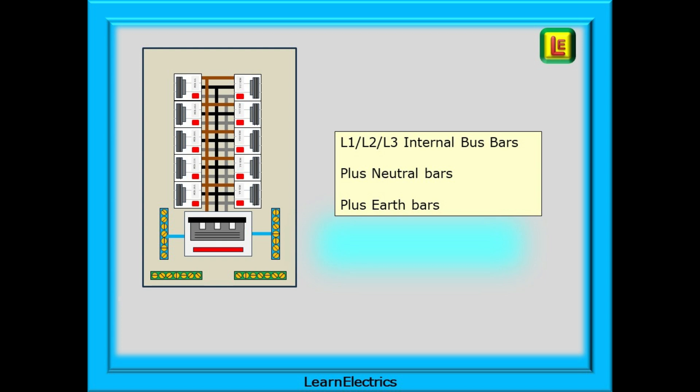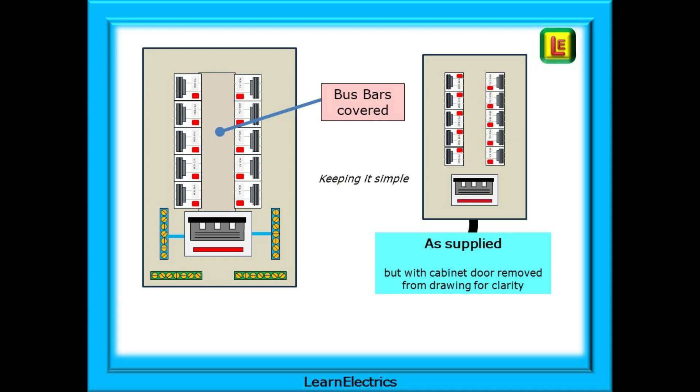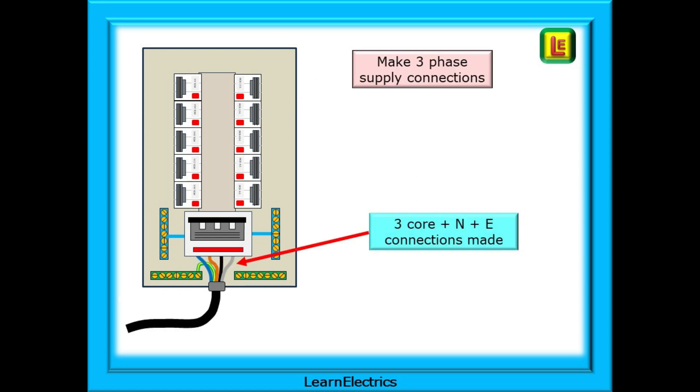So here is our finished board. We have the L1, L2 and L3 internal bus bars, plus the neutral bars and the earth bars. As supplied, the internal connections will not be visible and, keeping it simple, this is what we are looking at. Now we can make off the supply connections: three phases, plus neutral, plus earth.